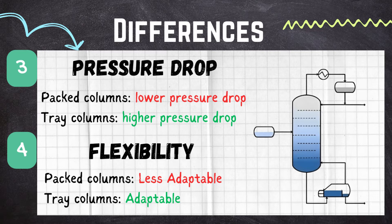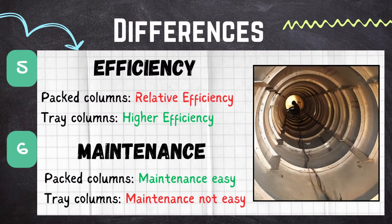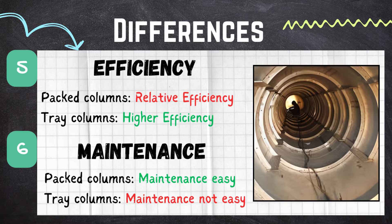In terms of efficiency, the packed column can have lower separation efficiency compared to the tray column, especially in high purity separations. The tray column offers higher separation efficiency due to the greater number of theoretical plates.